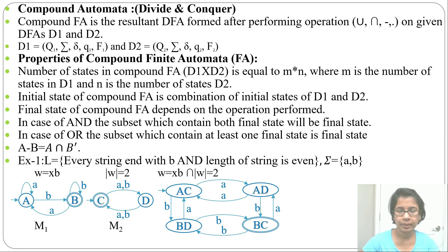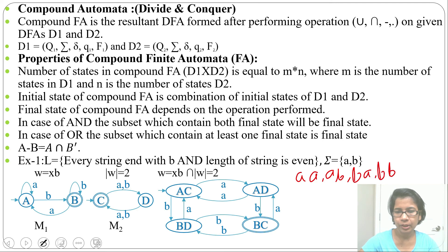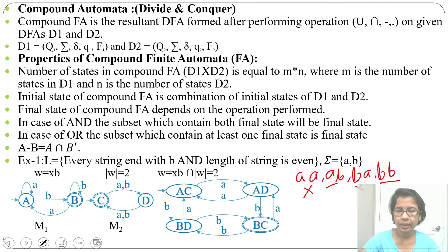Which strings will this DFA accept? Length must be even and strings must end with b. For length 2, possible strings are: aa, ab, ba, and bb. Checking which end with b: ab ends with b, bb ends with b. aa does not end with b — length is even but it doesn't end with b. ba does not end with b either.